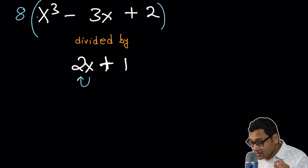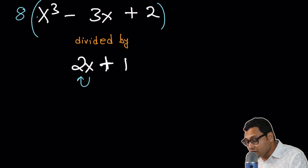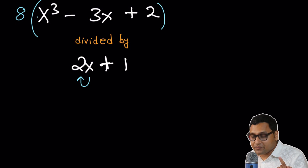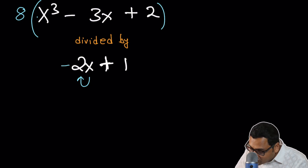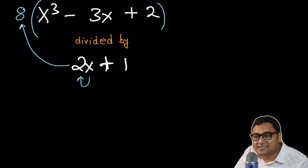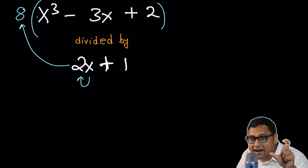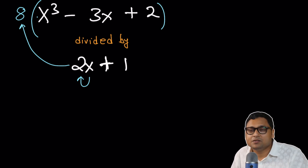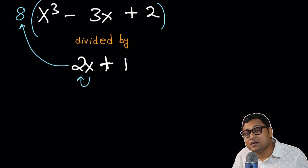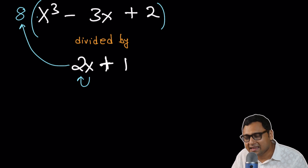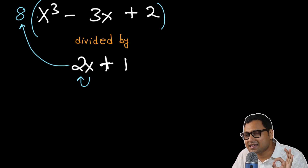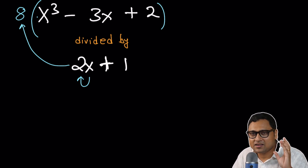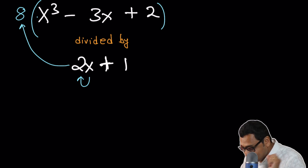Now you might say: if 2x + 1 divides the multiplied expression, maybe it divides the 8 as well. Here is a challenge question — can you tell me in the comment section why 2x + 1 will never divide 8? It's a very simple thing. Just think about it and comment. That's the challenge.